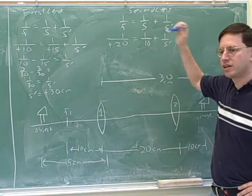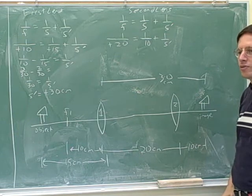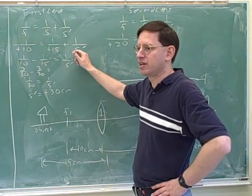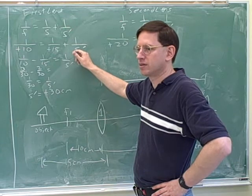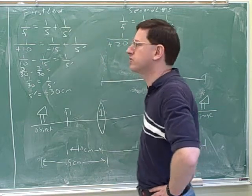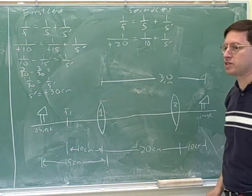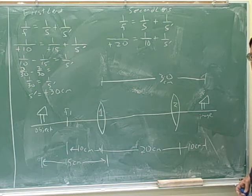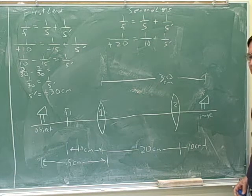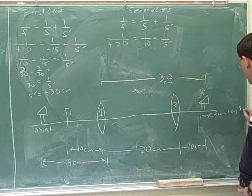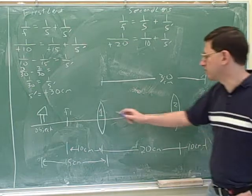What does S represent here? The distance between the object and the lens — the second lens, because now we're doing the second lens equation. And what does S prime represent? The distance between the image and the first lens. It's important to label, if you're doing the lens mirror equation more than once, what each of them refers to. The image for the first lens becomes the object for the second lens. Here, the image from lens one is 30 centimeters away from lens one.